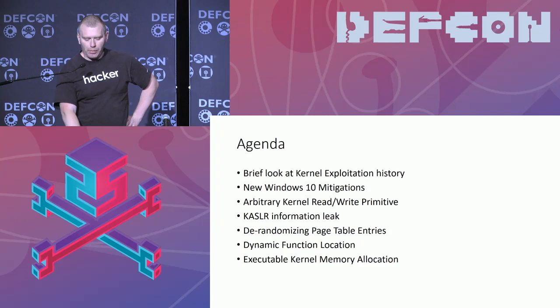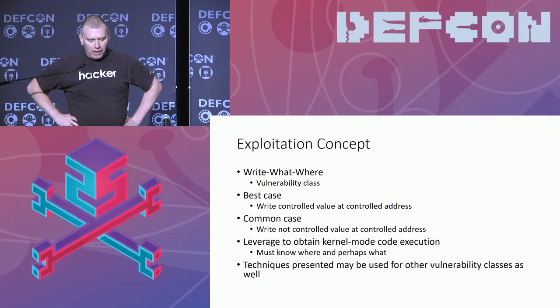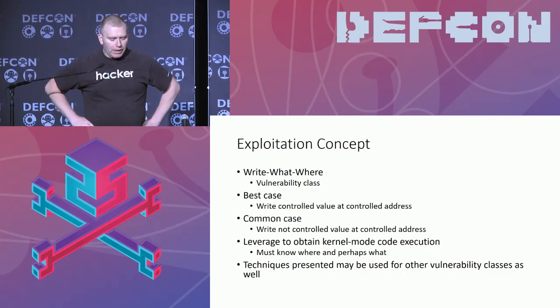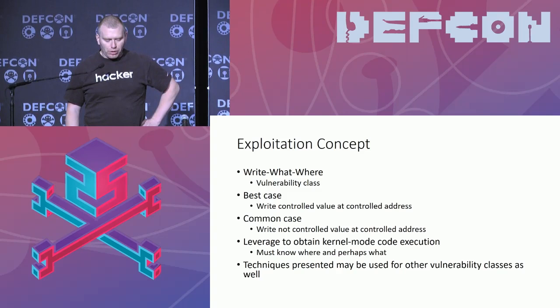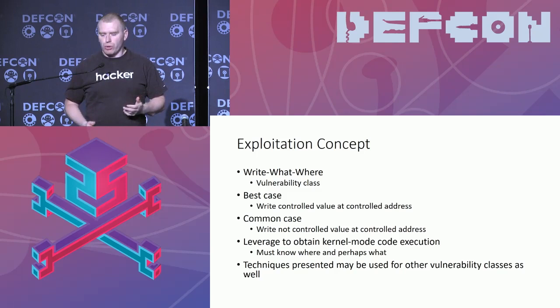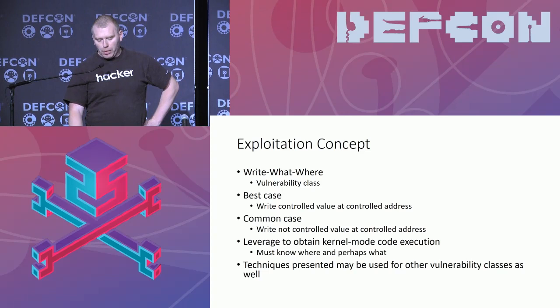Write-what-where vulnerability: the best case of this vulnerability class is that you can write a control value at a control address somewhere in the kernel. But a more commonly found bug will most likely write a non-controlled or semi-controlled value at a control address in the kernel. So once that's possible, we have to leverage this to write in some way to get kernel code execution, and the most important part is we have to know where to write. These techniques are for write-what-where vulnerabilities, but they can be used for other vulnerabilities as well, like pool overflows or use-after-free.